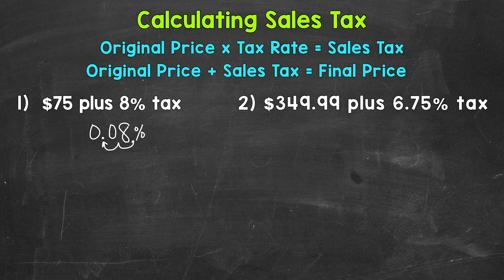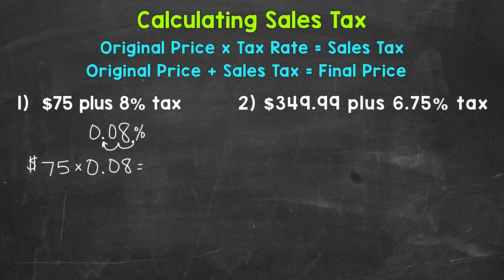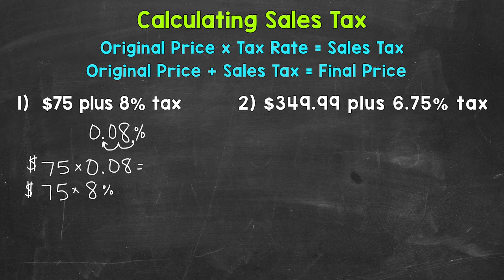So we take our original price of $75 and multiply it by 0.08. If you're using a calculator with a percent button, you can also do $75 times 8% — just make sure you hit that percent button. Do not do 75 times 8. Either method will give us the correct answer for how much we are paying in sales tax.